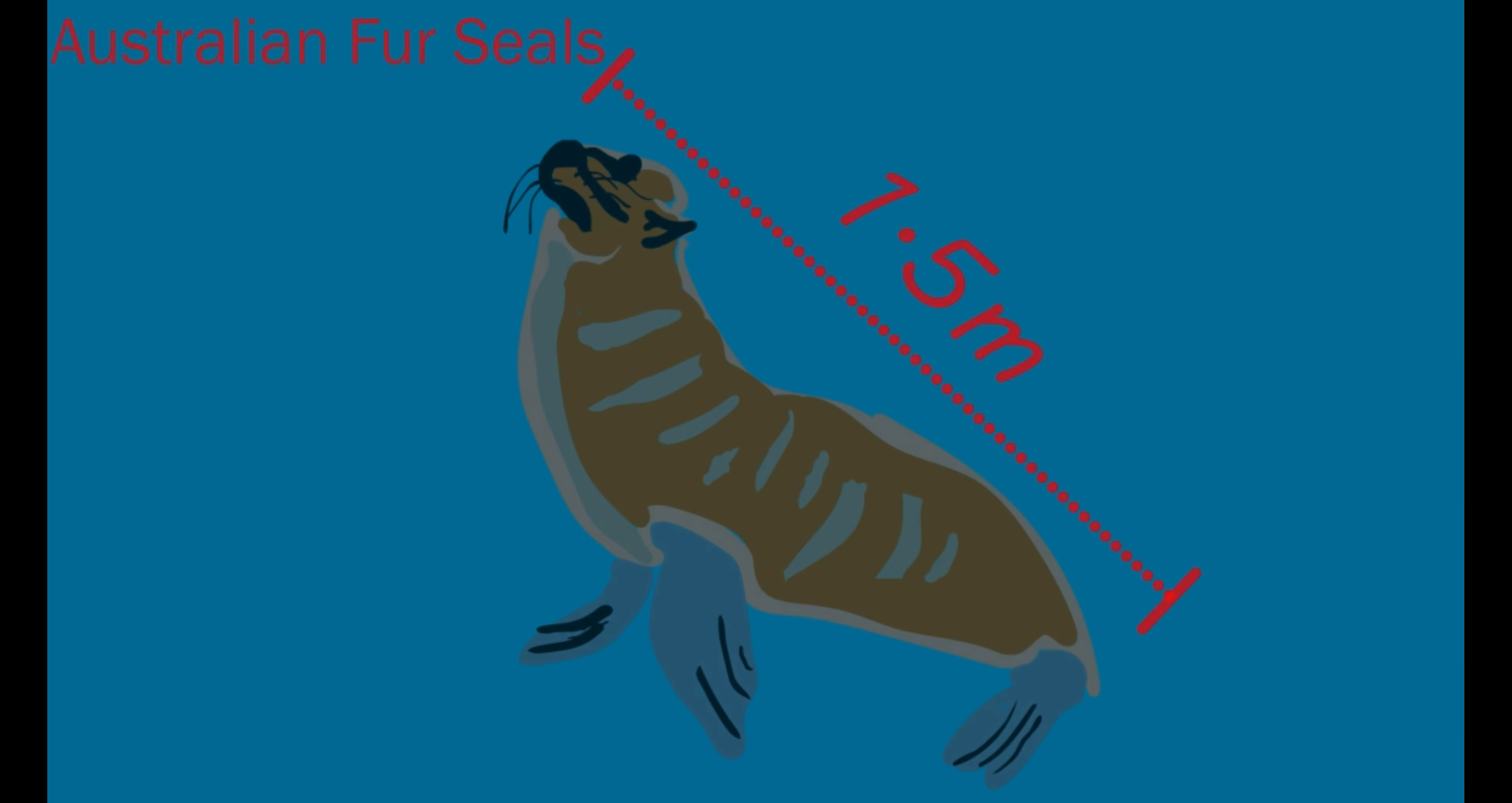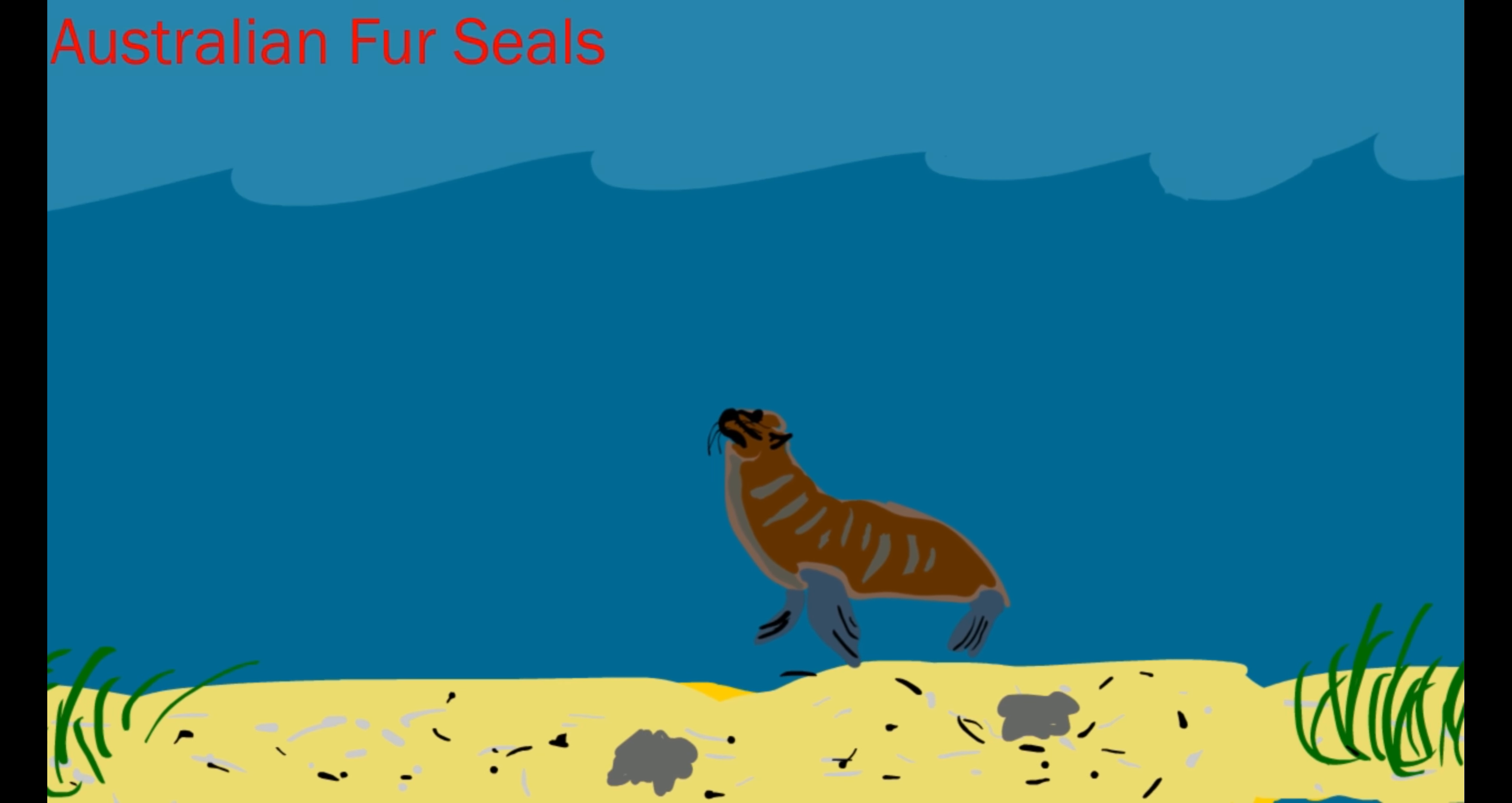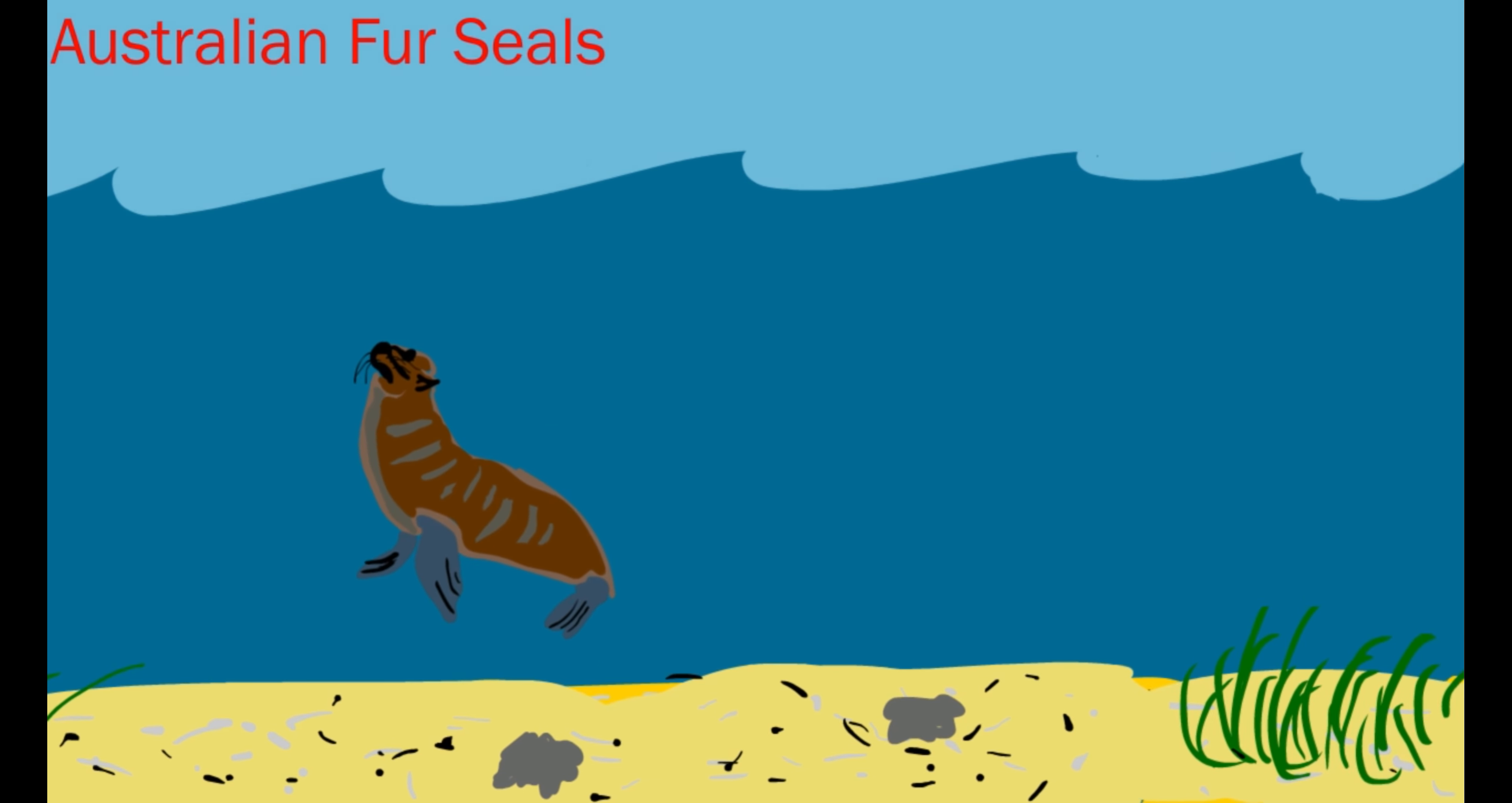Another animal that spends time both in the water and on land is the Australian fur seal. They are usually between 1 and 2 meters long and can weigh as much as 360 kilograms. They are smart hunters who like to eat fish and squid.